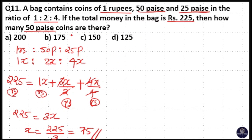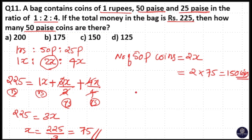So we have to find how many 50 paise coins are there. The number of 50 paise coins is equal to 2x. That means 2 into 75 is equal to 150 coins.